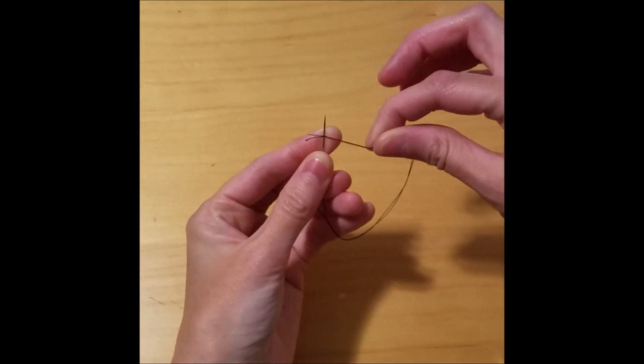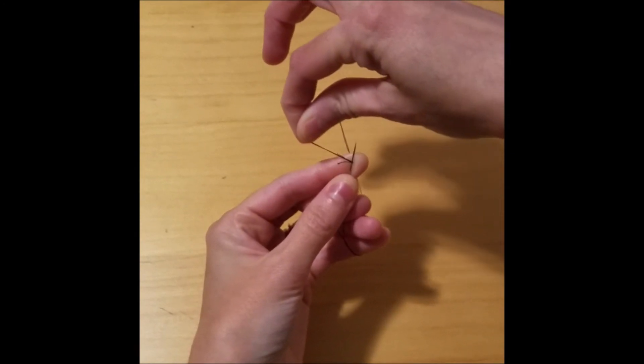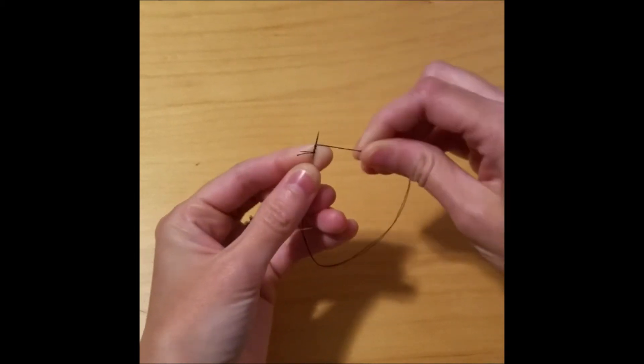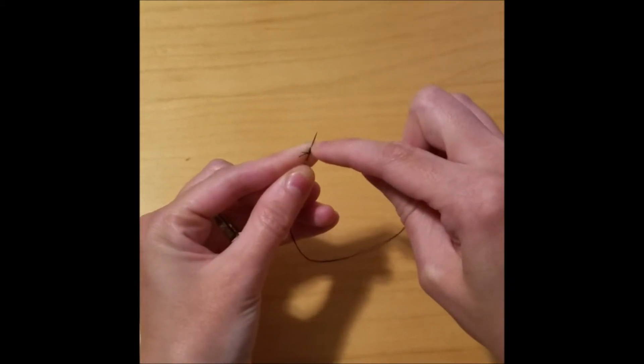I wind it around the front of the needle one, two, three. I wound it three times. Now I have all these knots.